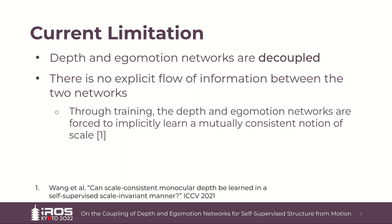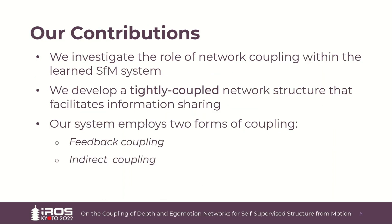Producing scale consistent networks is challenging, and the scale inconsistency that remains between the networks has been shown to negatively impact convergence at training time. We address this limitation by investigating how the depth and ego-motion networks within the learned SFM system can be properly coupled to facilitate information sharing both at training and test time. We develop what we call a tightly coupled network structure that employs two coupling strategies, namely feedback and indirect coupling. In the coming slides, we discuss our system and then demonstrate how our proper network coupling improves the overall system performance.